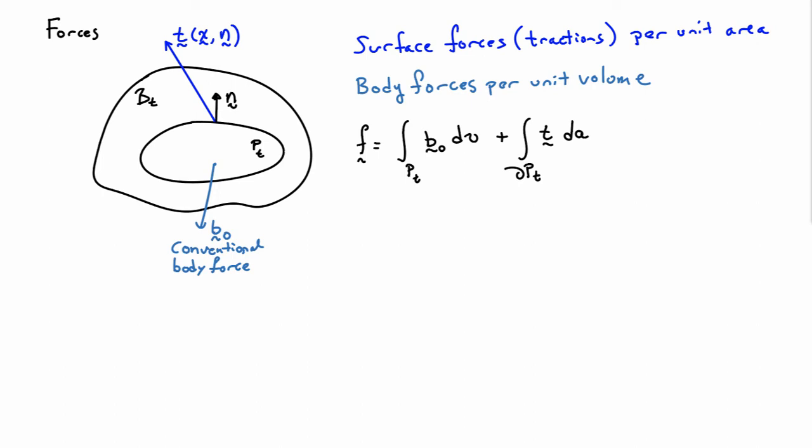The total force acting on my part PT is going to be the sum of all these forces. If I take the force per unit volume and multiply it by incremental volumes, then add up by integration over the domain PT, I'll get the total body force acting on the part. On the surface, if I take the traction, multiply by the areas, that gives me a force, and I can add that up through integration over the surface of PT. Taken together, that gives me the total force on the part of the body that I'm looking at.